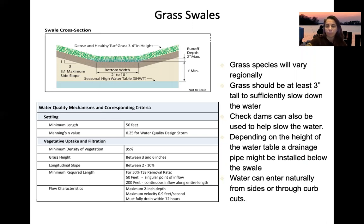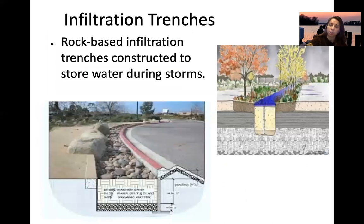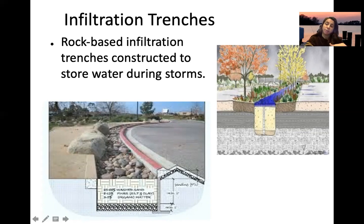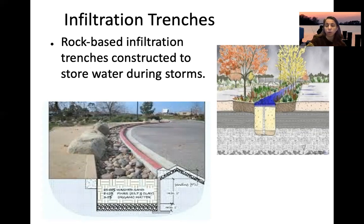Infiltration trenches may combine planted gardens with a rock trench. Water from the gardens flows into the infiltration trench, which contains rocks and slowly infiltrates water into the surrounding sediment below or through an outlet pipe.